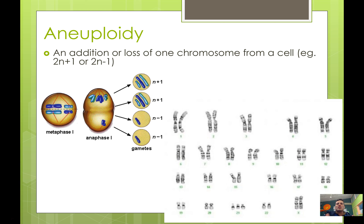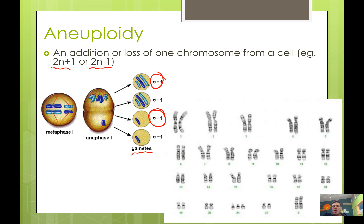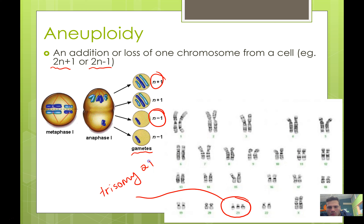Aneuploidy, on the other hand, is the addition or loss of only one chromosome from a cell — for humans we say 2N plus 1 or 2N minus 1. This happens during metaphase and anaphase when chromosomes don't separate properly, leaving N plus 1 or N minus 1 gametes. The most common form in humans is trisomy 21, or Down Syndrome, where there's an extra copy of chromosome 21.